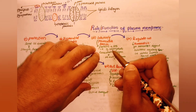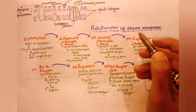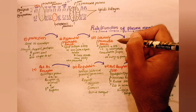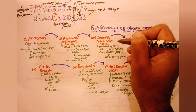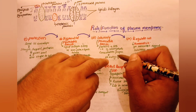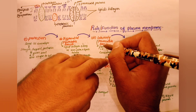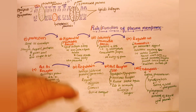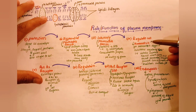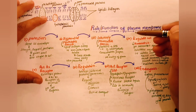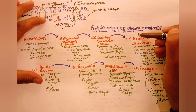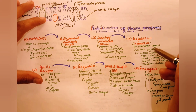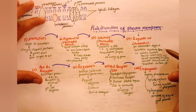For example, if there is high carbohydrate concentration in the cell, the proteins prevent the entry of glucose, regulating cell homeostasis. Different substances are regulated across the plasma membrane to maintain homeostasis.